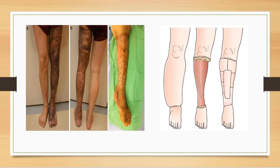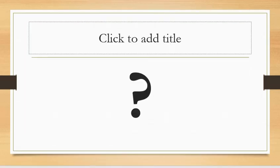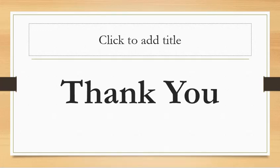In summary, treatment of lymphedema includes conservative treatment — manual lymphatic drainage, medicines, and exercises — and surgical options: bypass procedures, liposuction, and limb volume reduction surgeries in the form of Homan's, Thompson, and Charles procedures. Thank you very much.